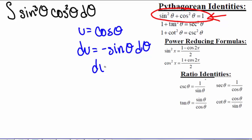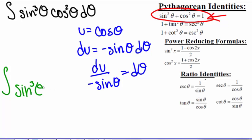So du divided by negative sine of theta equals d theta. So then we have the integral of sine cubed theta times u squared times du divided by negative sine of theta. So this negative sine of theta, well the negative sine stays, but this sine of theta cancels out with one of these sine of thetas.